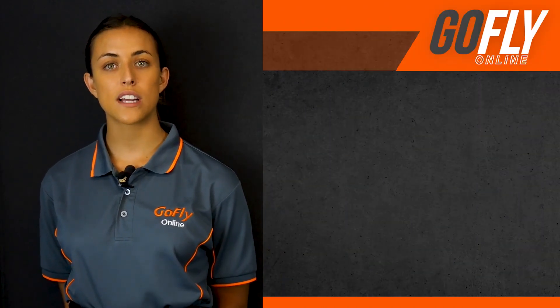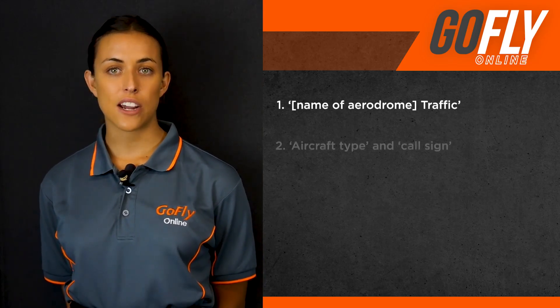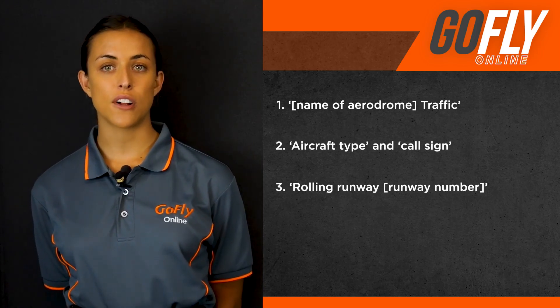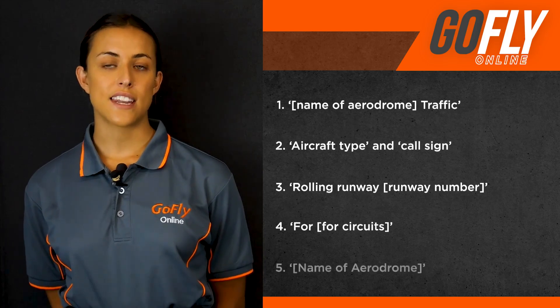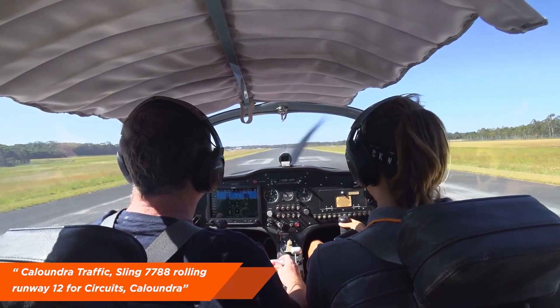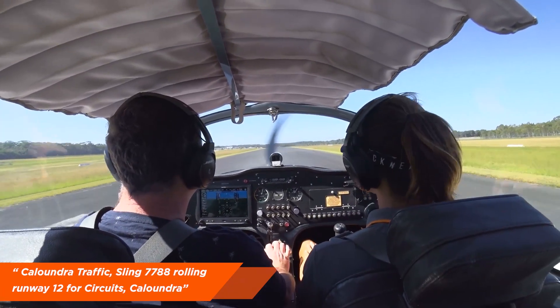After you have backtracked, it is important to give a rolling call with your intentions. The suggested rolling call when taking off on a runway after backtracking would include the name of the aerodrome, followed by traffic, aircraft type and call sign, rolling runway with the runway number, for intentions, and the name of the aerodrome. For example: Caloundra traffic, Sling 7788, rolling runway 12 for circuits, Caloundra.